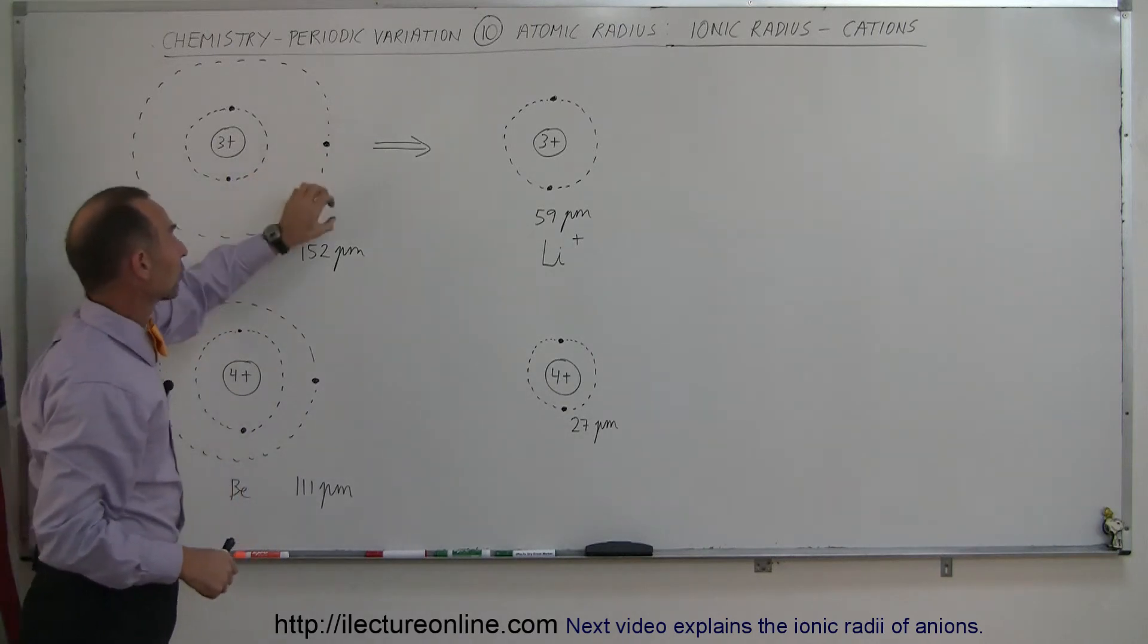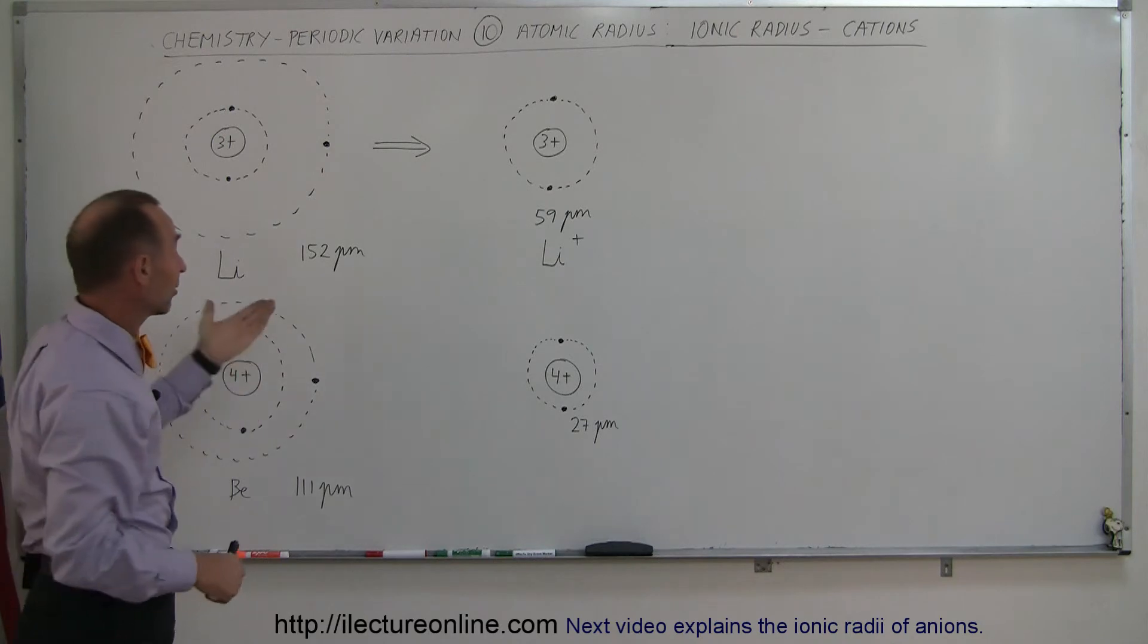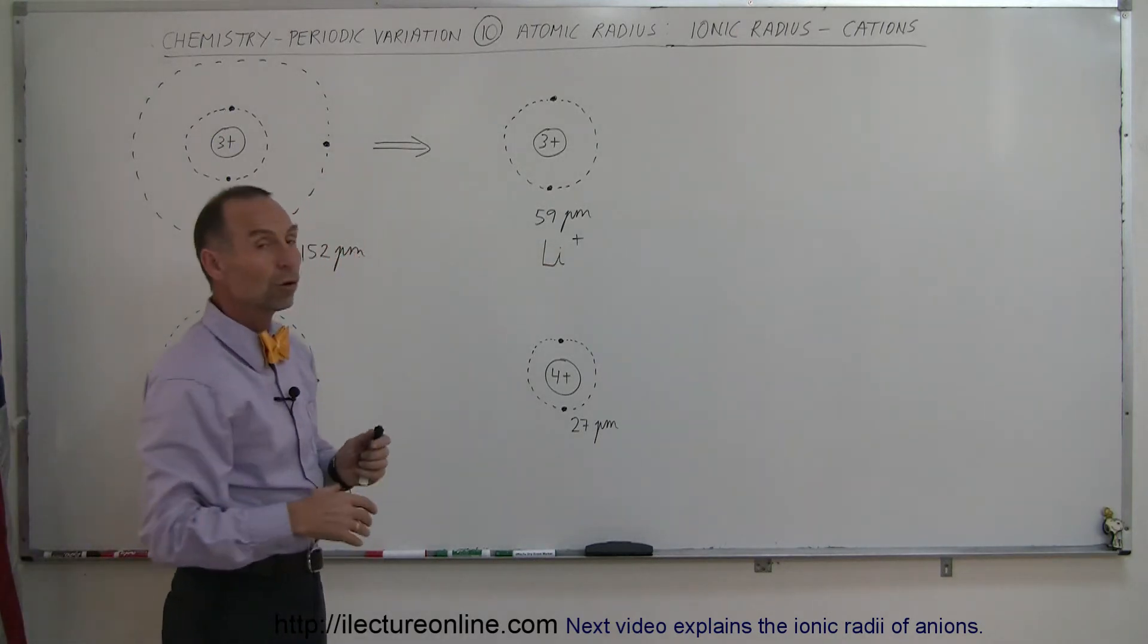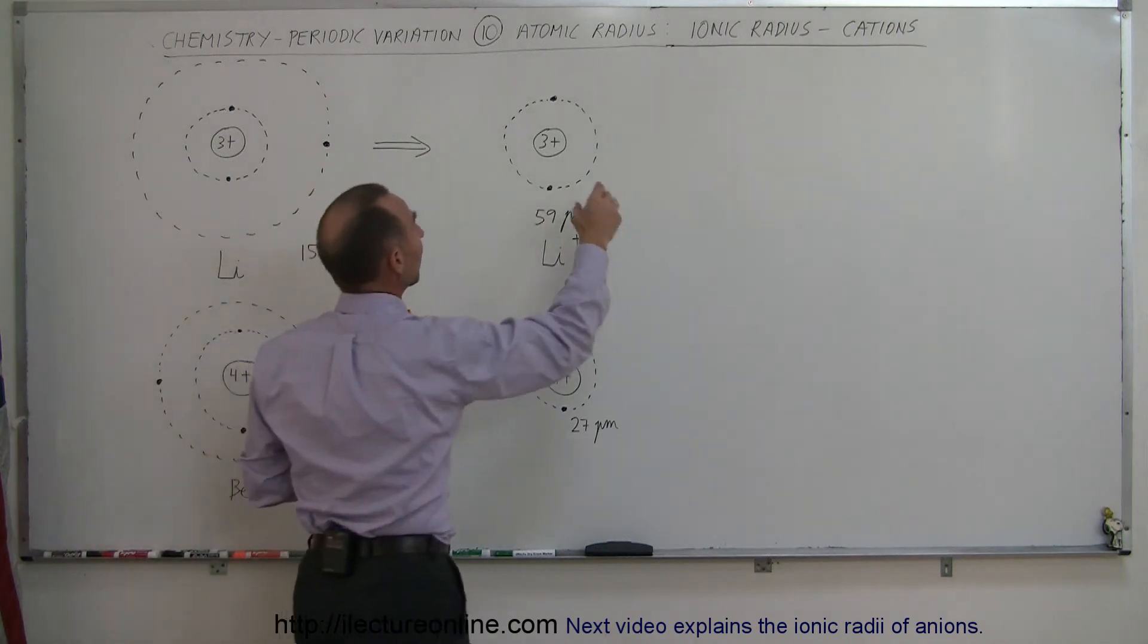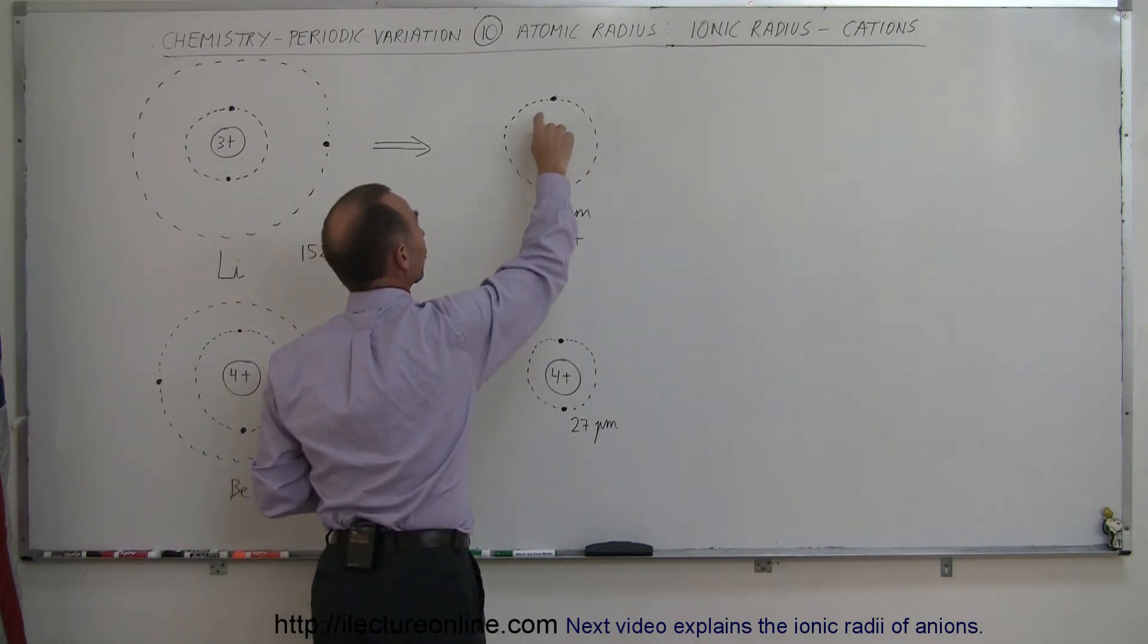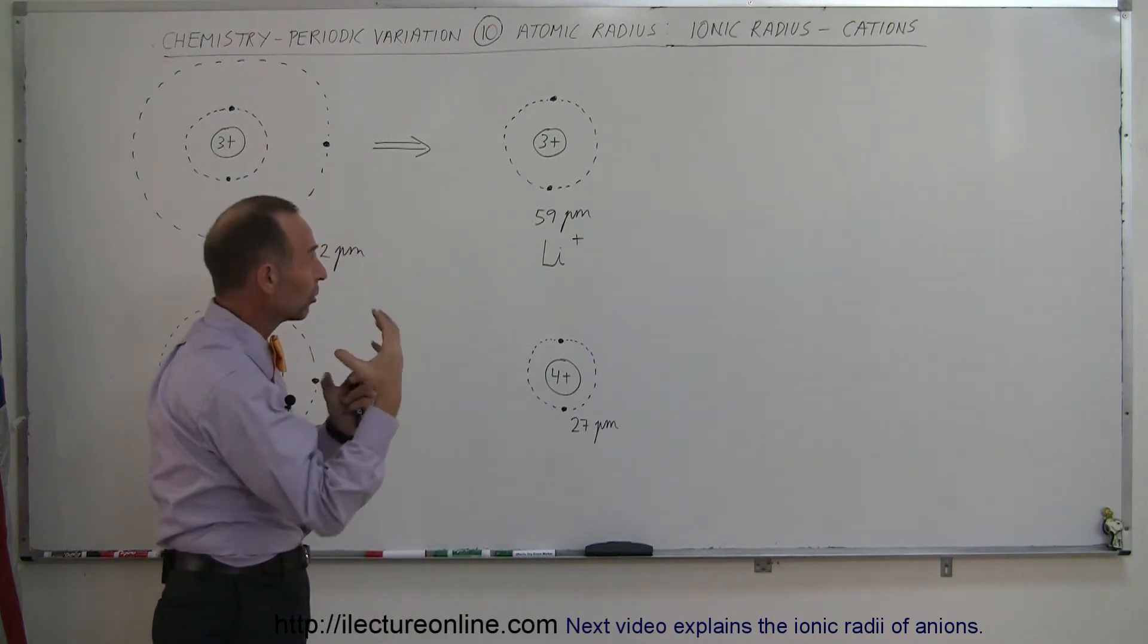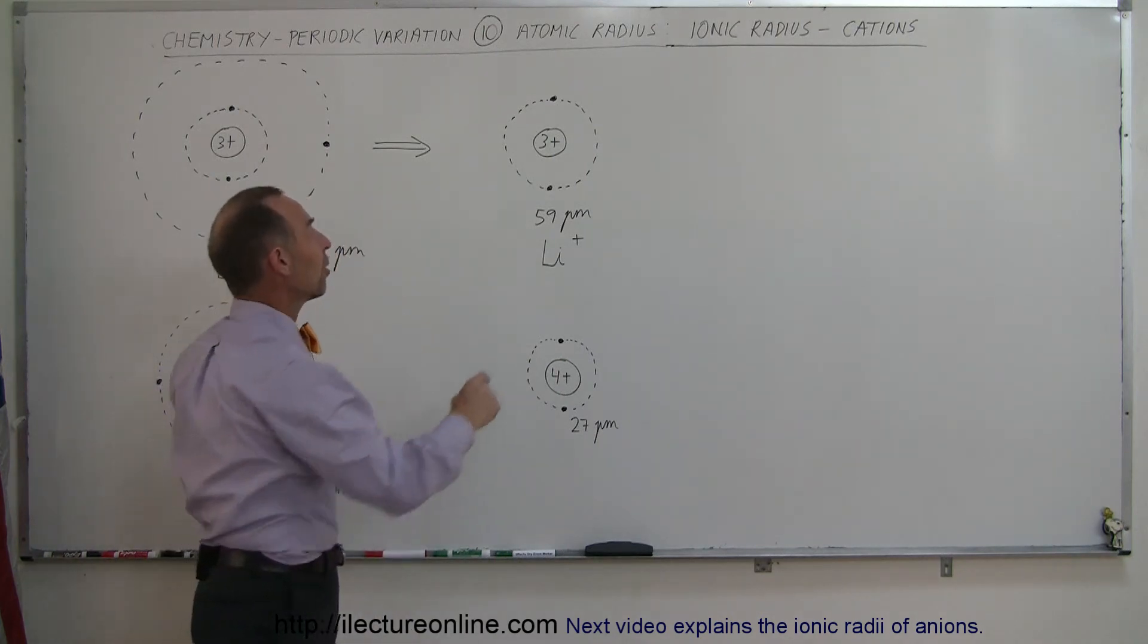Once we remove the electron, therefore causing the lithium to become a lithium ion, positive one charge, notice then that the electron is gone. We now have three positive charges pulling on two electrons in the innermost energy level. It's a lot of force pulling them in, making the atom fairly small, only at 59 picometers.